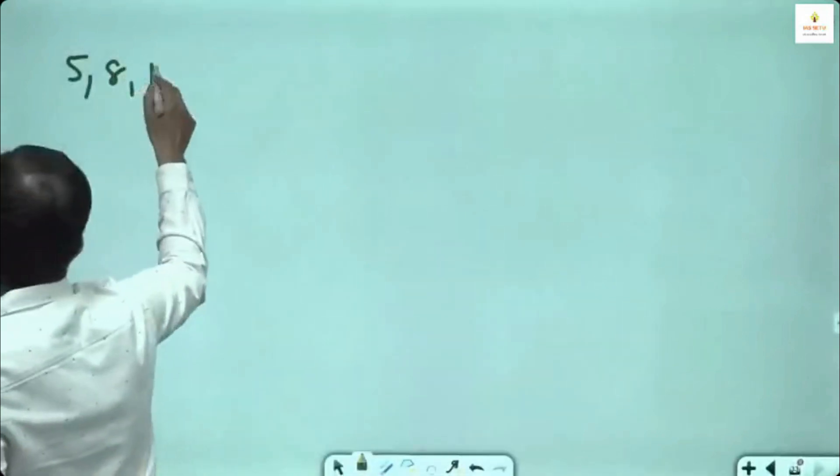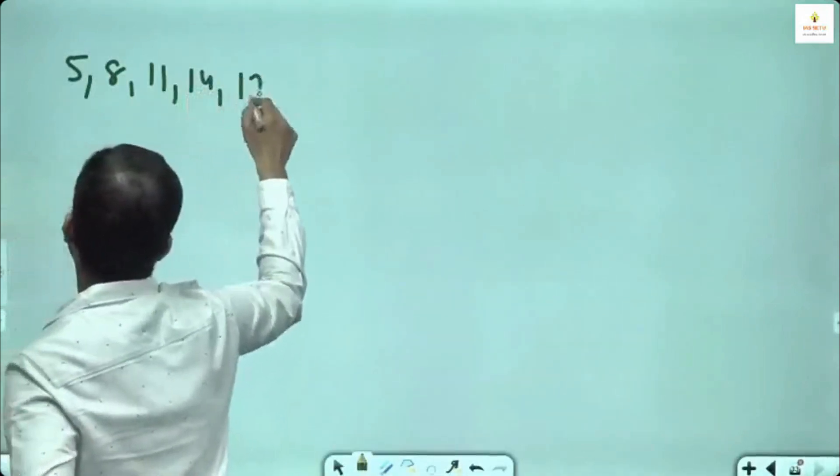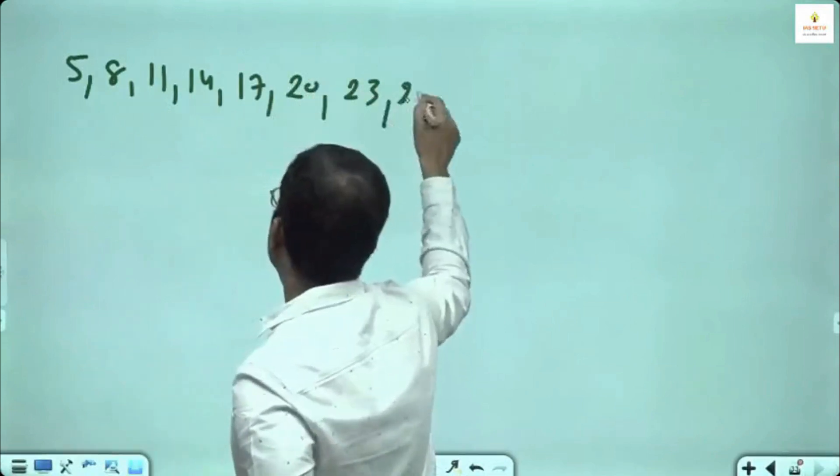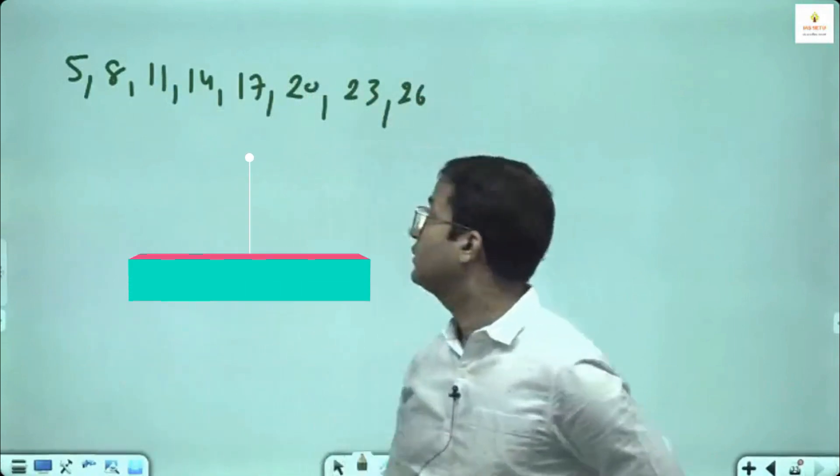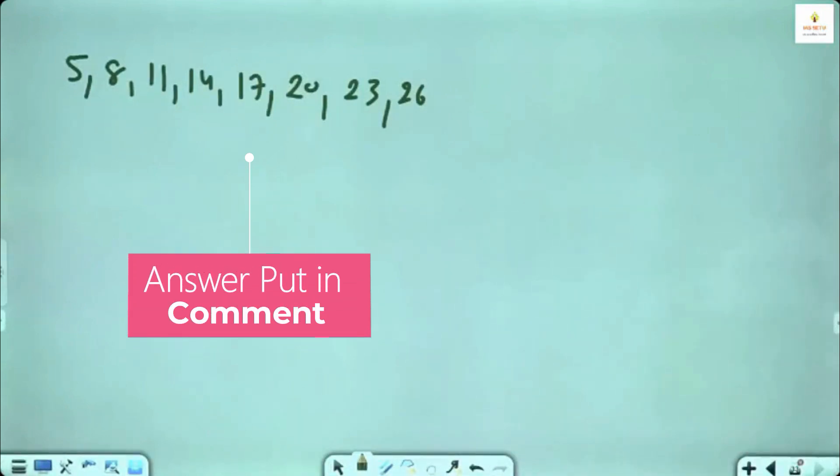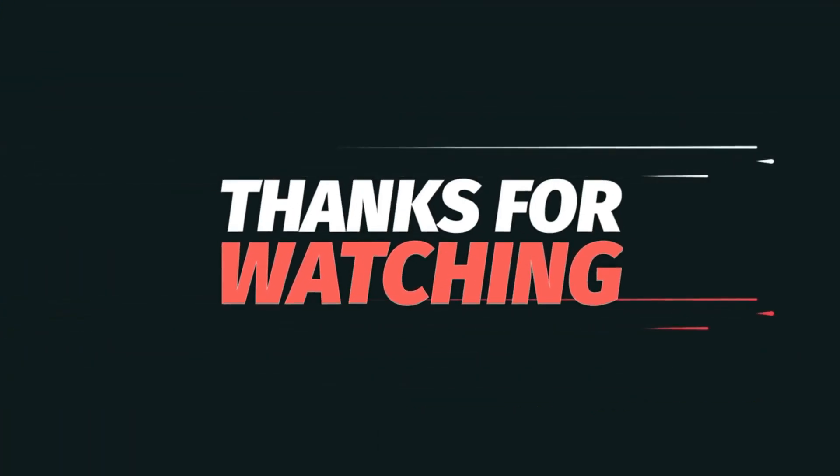5, 8, 11, 14, 17, 20, 23, 26. What will the average of this sequence be? 5 plus 26 divided by 2, 31 divided by 2 is 15.5.